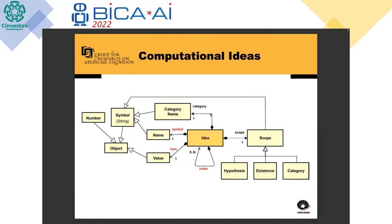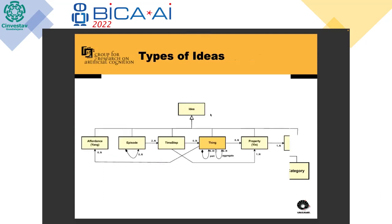The most important part of the model is that an idea can refer to other ideas. This is the key issue: if I can refer to other ideas within my idea, I can start creating complex ideas and virtually represent everything. These ideas can be of many different types: properties, things, time steps, episodes, quality dimensions, and affordances.